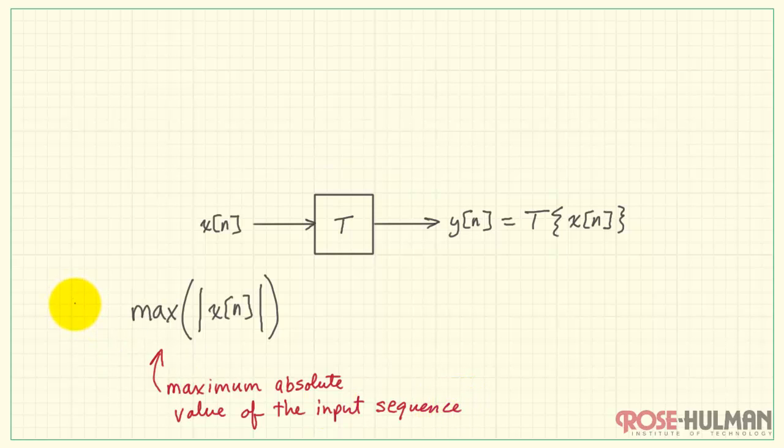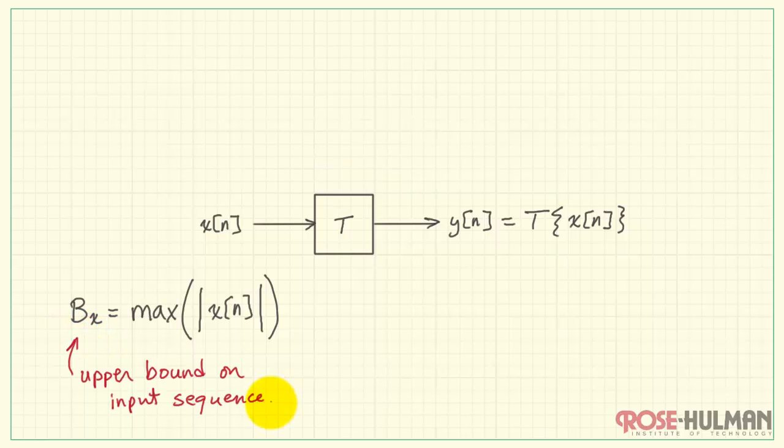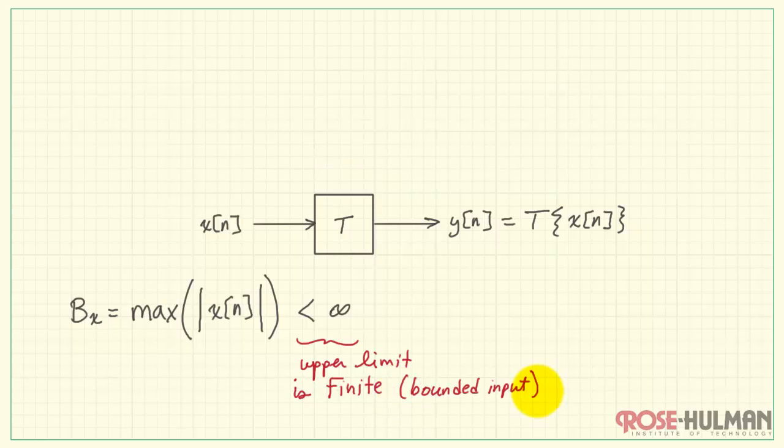I'll give that the name b sub x, and this is the bound on the input, or let's say it's the upper bound on the input sequence. And by definition, we want to say that this upper bound is finite. So we form a bounded input to the system.